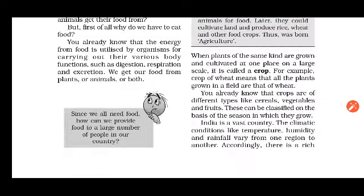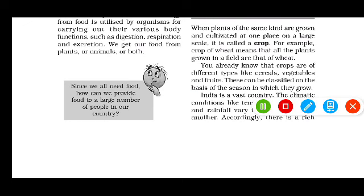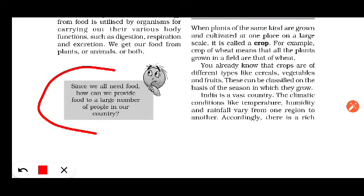I would like to request you to read this box. Since we all need food, how can we provide food to a large number of people in our country? In this box, one question is asked: our country is very large, so how is it possible to provide food to all the people in the country? If I ask this question to you students, then what will be your answer? Name the process which is providing food to 135 crore people in the country. And probably your answer will be Agriculture.